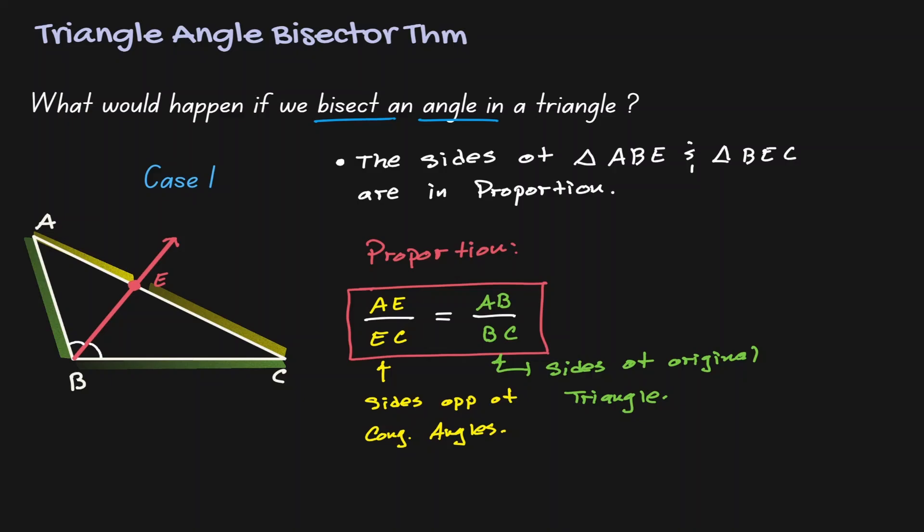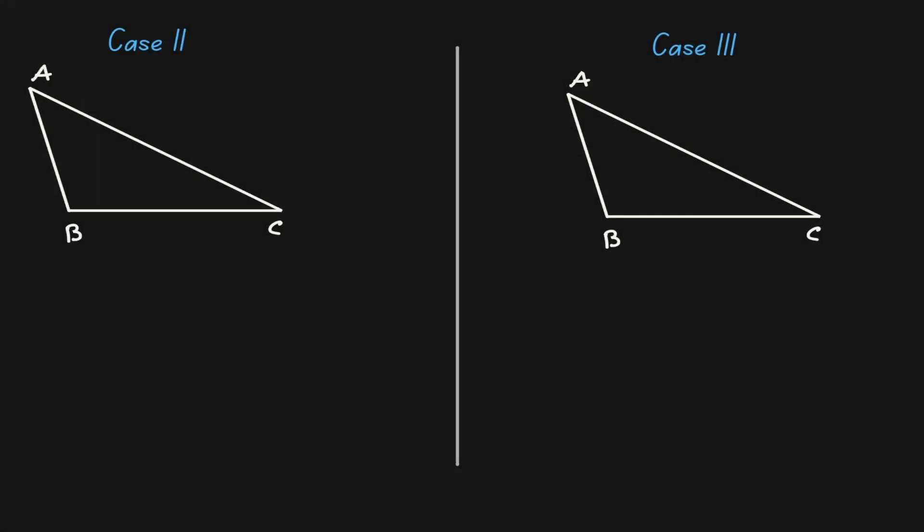Given any triangle, if you bisect an angle, then you have a proportion among the sides of the original triangle. Let's take a look at the second and third case. In our second case, let's bisect angle A. And if that's the case, then these two angles are congruent to each other.